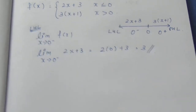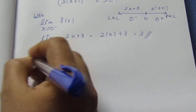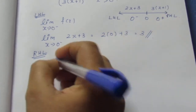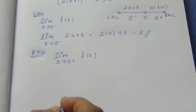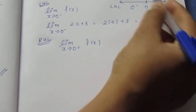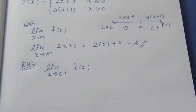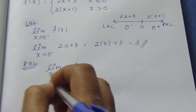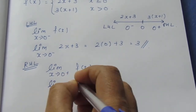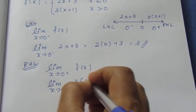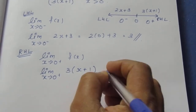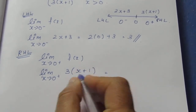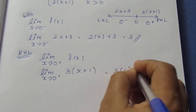So the left-hand limit is equal to 3. Now for the right-hand limit, limit x tends to 0 positive of f(x): f(x) equals 3 into (x plus 1). Substituting x equals 0, we get 3 into (0 plus 1) equals 3 into 1, which equals 3. Also, f(0) uses the formula 2x plus 3, giving 2 times 0 plus 3 equals 3.